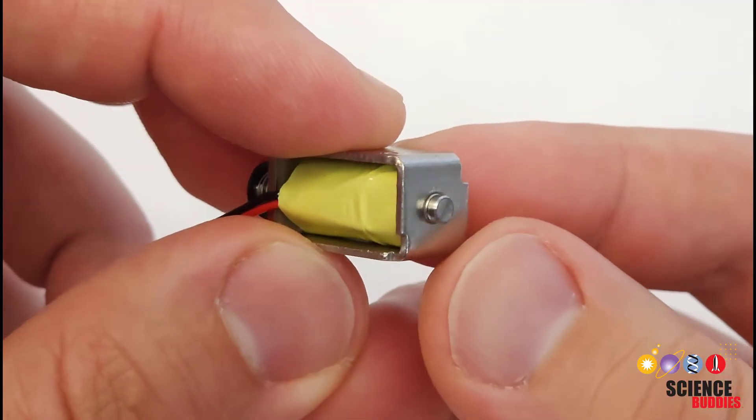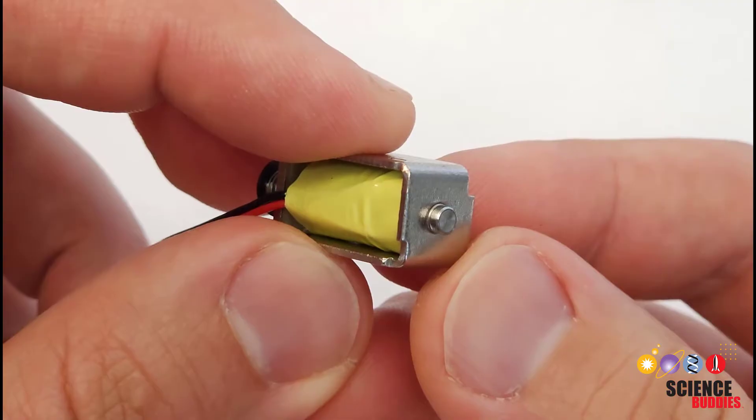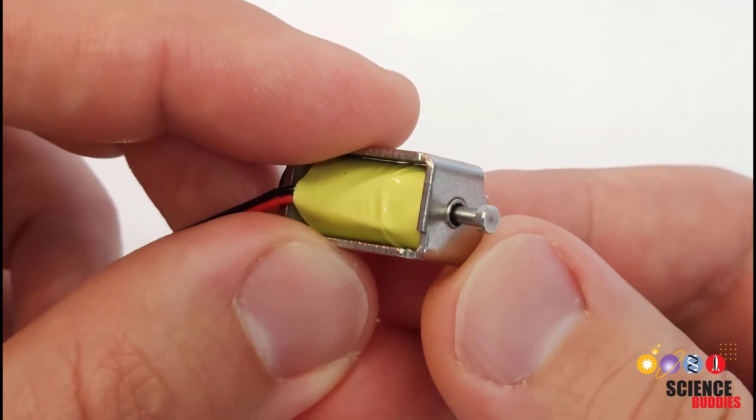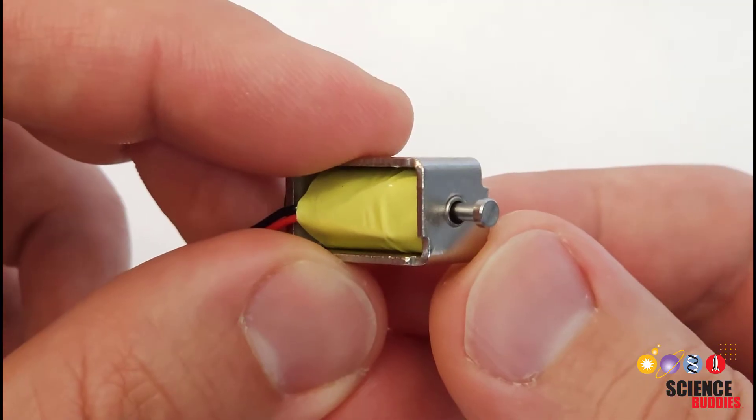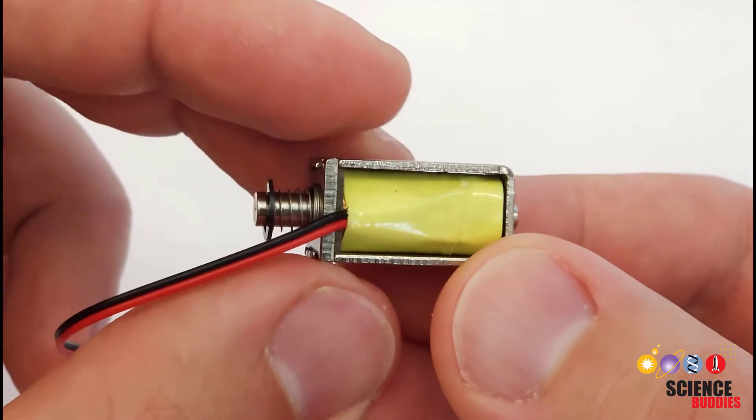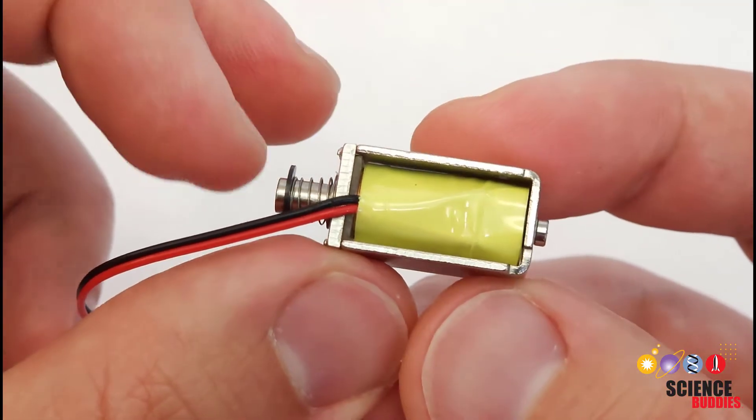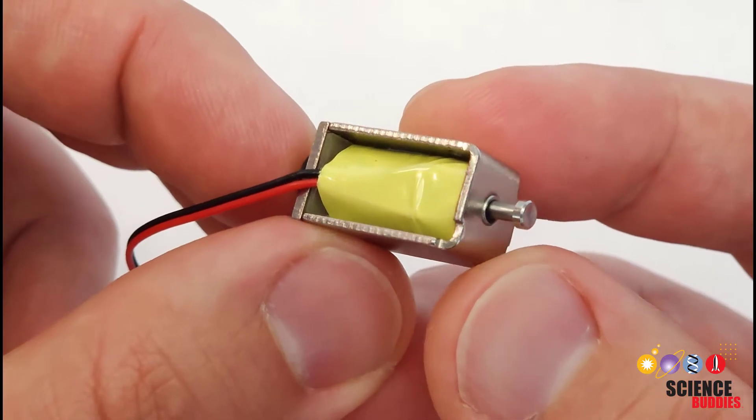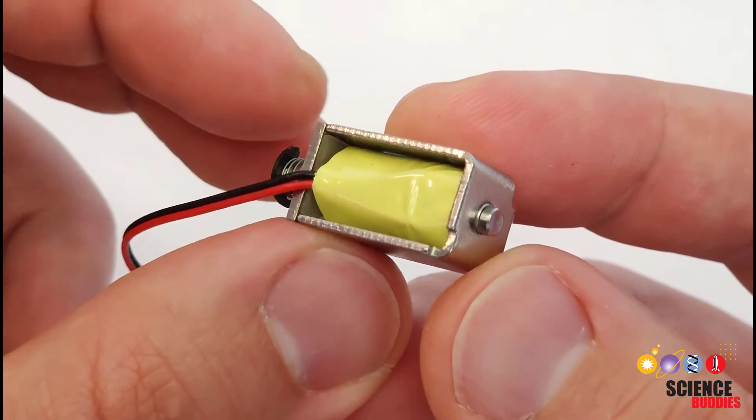There are different types of solenoids depending on how the core and coil are configured. There are push solenoids that will push out when you apply current. There are pull type solenoids that will pull in when you apply current. And this is a push-pull solenoid that also has a return spring. So when I apply current, this is going to push out. And then when I release the current, it is going to pull back.